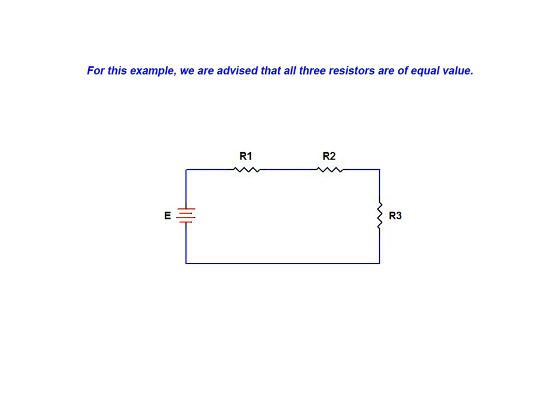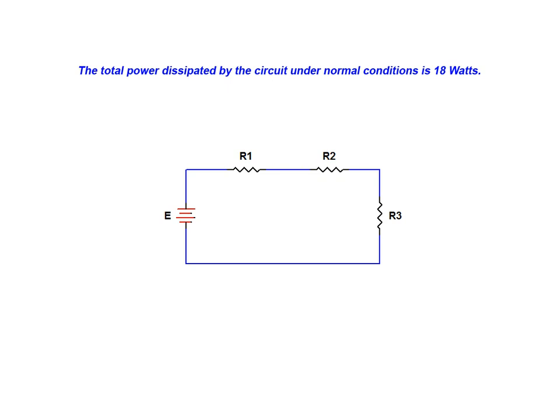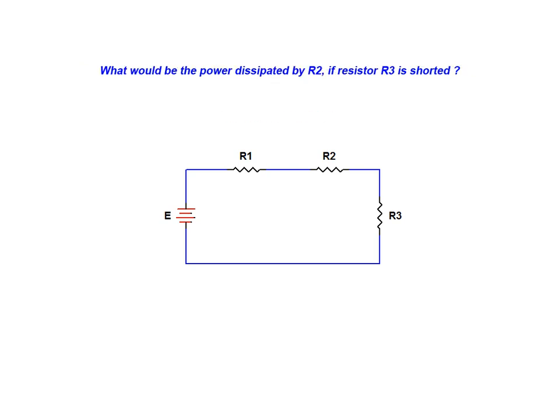For the purposes of this example, we are advised that all three resistors are of equal value. We are also advised that the total power dissipated by the circuit under normal conditions is 18 watts. Knowing only these two pieces of information, we are asked what the power dissipated by R2 would be if resistor R3 was shorted.